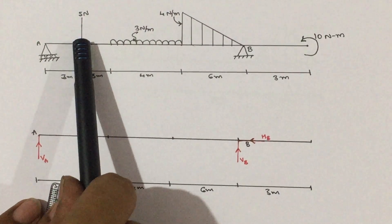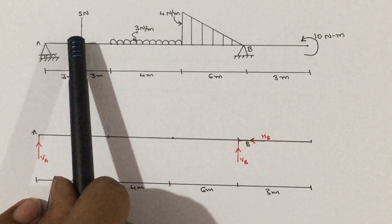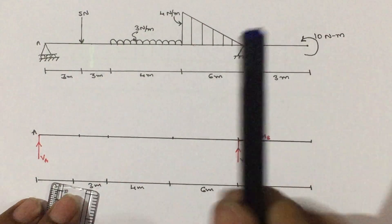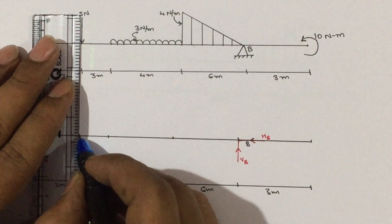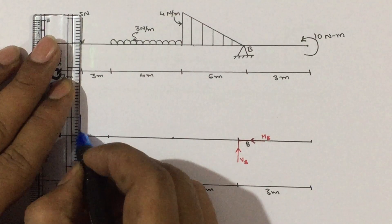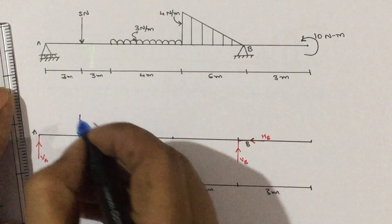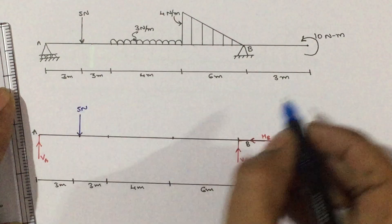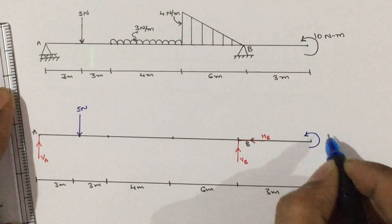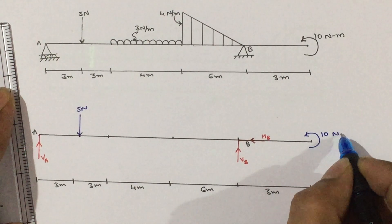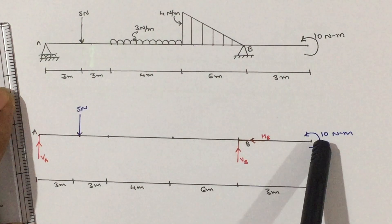Third step: if it is a point load or a moment, write it directly. There is a 5 Newton point load — write 5 Newton. Then there is a couple moment — write that couple moment directly.